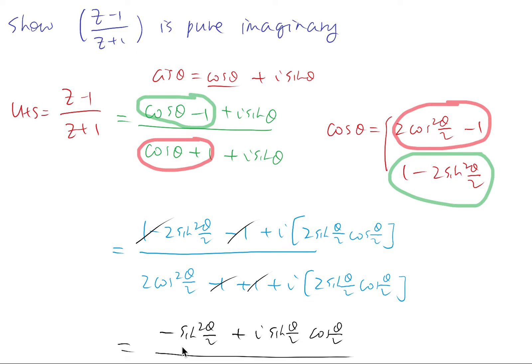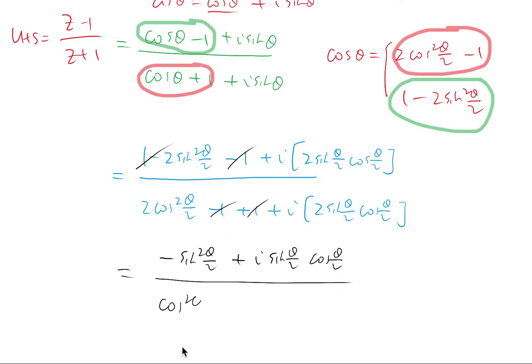And then the bottom is cos squared(θ/2) plus i sine(θ/2) cos(θ/2). And there are two different ways we can simplify them.